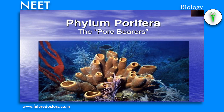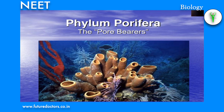Phylum Porifera: this includes the first and most primitive group of multicellular animals, referred to as poriferans — that is pore-bearing animals. They are primitive multicellular animals commonly called sponges. They are mostly marine and some are fresh water, found in ponds and lakes. Example: Spongia. The size of sponges ranges from one centimeter to one meter in length. Some have a vase-like cylindrical shape and the majority have an irregular shape.